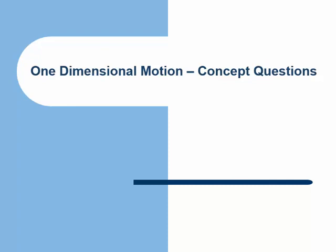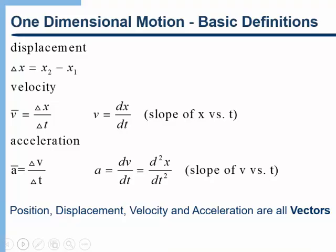In this video, we're going to test your conceptual understanding of our basic definitions for one dimensional motion. Let's just review what we talked about in the last video. Here are the basic definitions for one dimensional motion. Displacement is the final position minus the initial. We then defined average velocity as the displacement per time.